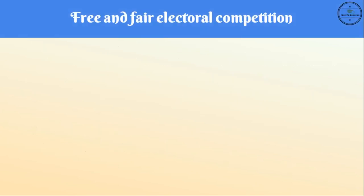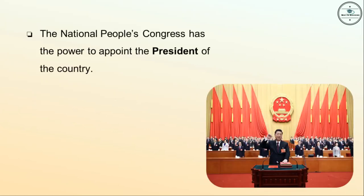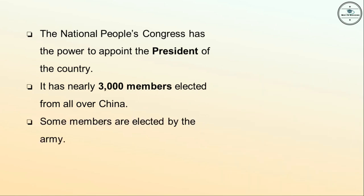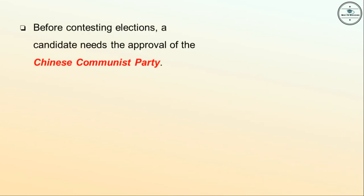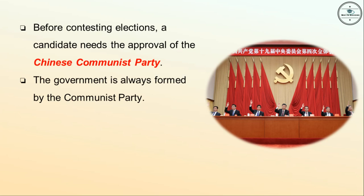The next point is free and fair electoral competition. In China, elections are regularly held every five years to elect the National People's Congress, which has the power to appoint the president. It has nearly three thousand members elected from all over China, and some members are elected by the army. Before conducting elections, a candidate needs approval of the Chinese Communist Party, and the government is always formed by the Communist Party.